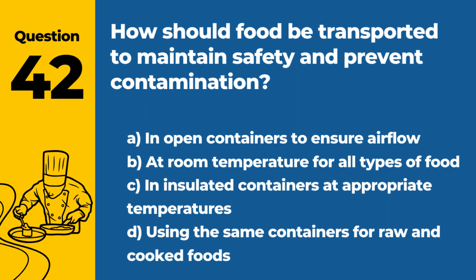Question 42: How should food be transported to maintain safety and prevent contamination? a. In open containers to ensure airflow. b. At room temperature for all types of food. c. In insulated containers at appropriate temperatures. d. Using the same containers for raw and cooked foods. Answer: c. To maintain safety and prevent contamination, food should be transported in insulated containers that keep it at appropriate temperatures, whether hot or cold, to inhibit bacterial growth.